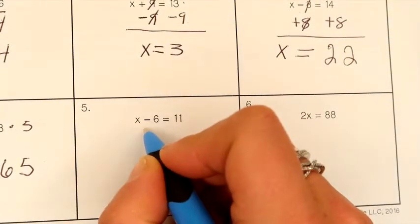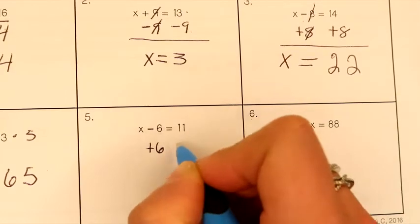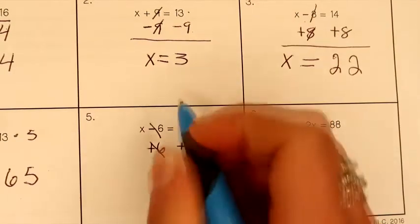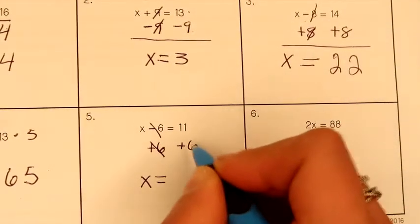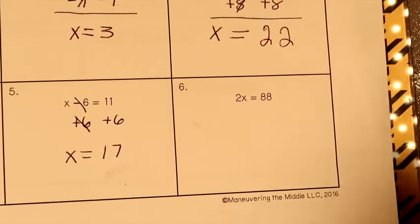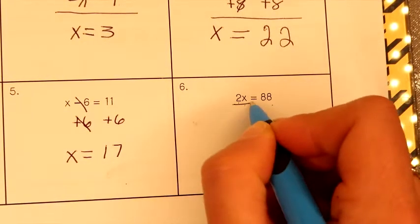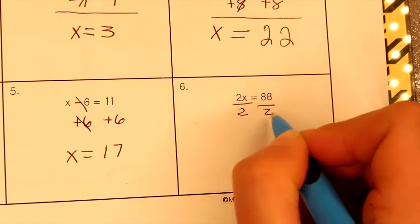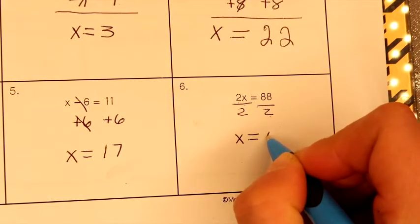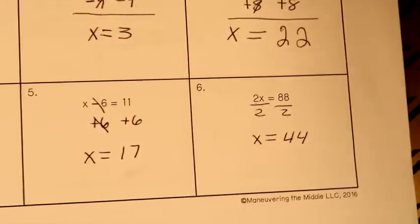Back to business kids, back to business. I'm sorry if you can hear my Rigby dog growling, it's because he is. He's kind of my jerk dog, but I love him. So, we have a subtraction problem, we have to make it addition. Negative 6 plus 6 plus 6 on the other side. We can cancel those out. X is equal to 17. This is multiplication, because 2 times x is equal to 88. Divided by 2, divided by 2. X is equal to 88 divided by 2, what's half of 88? 44. The first page is done.